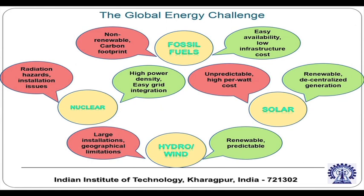Solar energy, one of the very prime sources being considered for modern day applications, has great advantages of renewability and decentralized generation, and of course the sun is a natural source of all energy. But it can be unpredictable and one of the big concerns is high per-watt cost. Hydro and wind are renewable and predictable, which obviates some previous disadvantages, but require large installations and have geographical limitations — you cannot utilize these sources at all geographical locations.